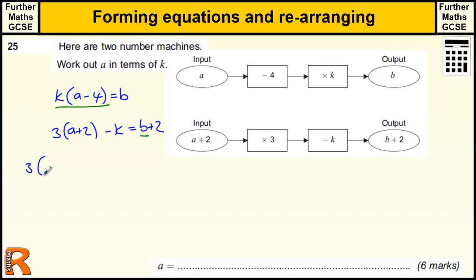So we can replace. We've got 3 lots of a plus 2 minus k equals - and this is the bit we're replacing - replacing this b by k lots of a minus 4, and then we've got a plus 2 on the end. So we've got an expression here with k's and a's, and we really want to work out a in terms of k. So we want a equals something to do with k.